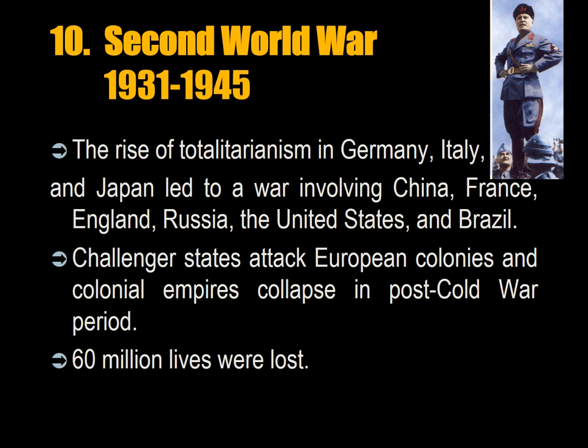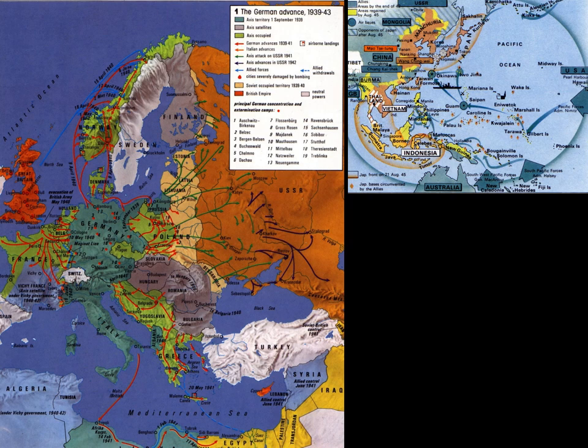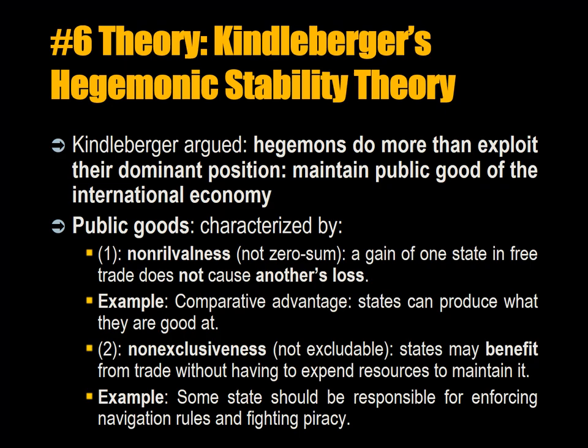The last systemic or general war was the Second World War, 1931 to 1945. It included all seven of the world's great powers. The rise of totalitarianism in Germany, Italy, and Japan led to a war involving China, France, England, Russia, the United States, and Brazil. At least 60 million lives were lost. The challenger states attacked European colonies, and colonial empires collapsed in the post-World War II period. You can see two maps here — one showing the war in Europe and one showing the war in the Pacific between Japan, China, the US, and other countries.